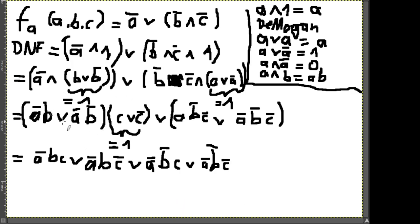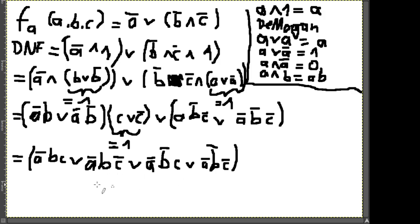Das sind alle vier Terme aus dem vorderen Klammerbereich. Aus unserem Nicht-A sind jetzt vier Terme geworden. Das Schöne: ich habe jetzt tatsächlich alle Variablen drin – A, B und C in jedem Term, manchmal negiert, manchmal nicht. Das ist das, was ich für die kanonische DNF und auch kanonische KNF auf der untersten Ebene brauche.